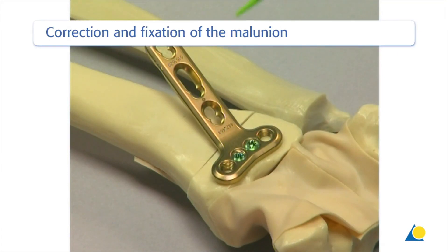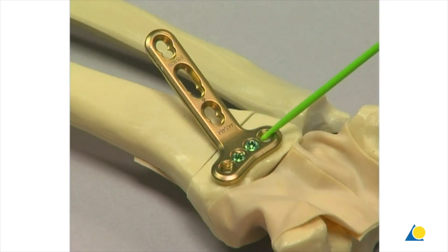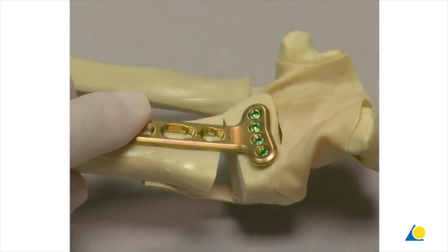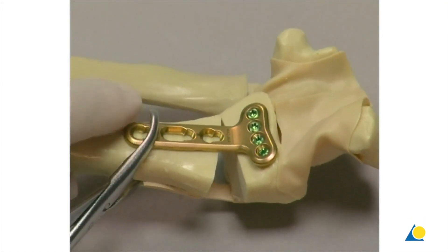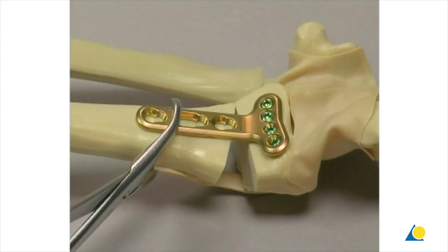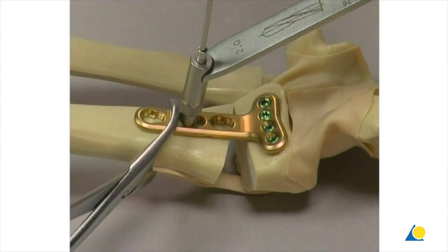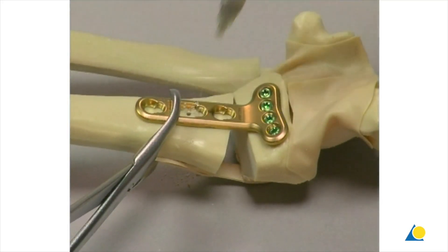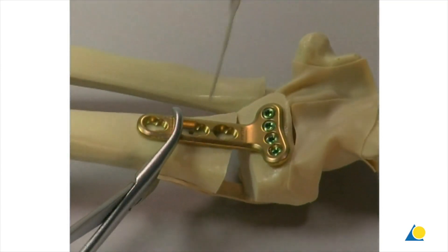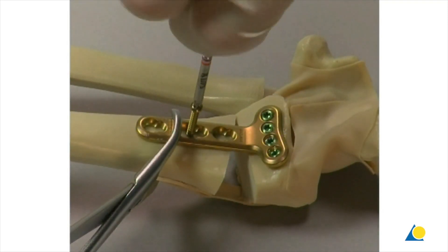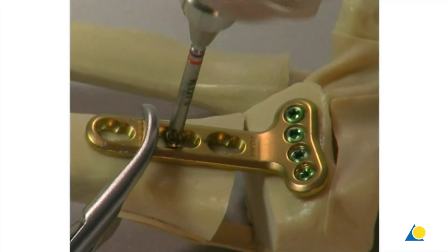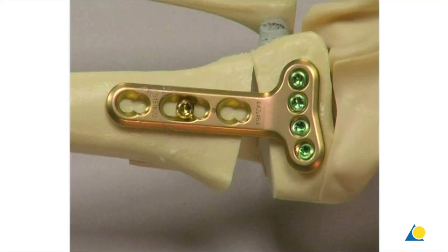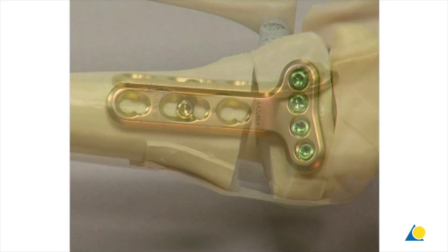The plate is returned to the previous site and the two screws are reinserted. The remaining plate holes in the transverse bar can be filled. The correction is now performed by aligning the shaft of the plate collinear to the diaphysis of the radius. Toothed reduction forceps hold the plate in place. The plate is provisionally fixed at the diaphysis with a 2.4 mm cortex screw inserted through the elongated plate hole. The universal drill guide is used with the 1.8 mm drill bit, the depth is measured, and the appropriate length screw is inserted. The appropriate angular correction can be seen in both the frontal and lateral planes.